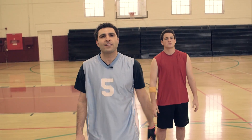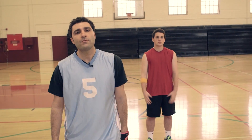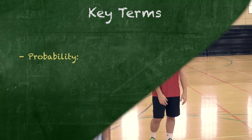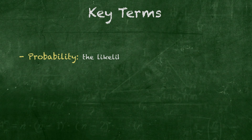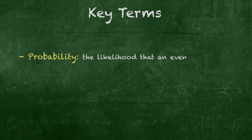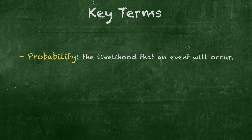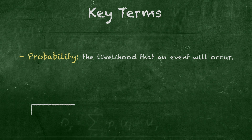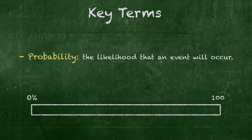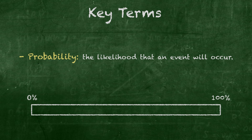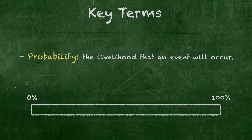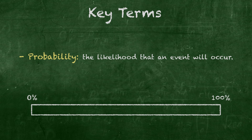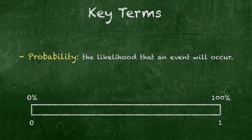To understand the likelihood of each outcome, we'll use some basic concepts in probability. Probability measures the likelihood of an event occurring. The probability of any event occurring will always be between 0 and 100%, so we can say that a probability will always be a number between 0 and 1.